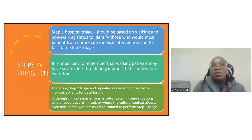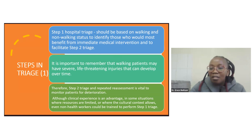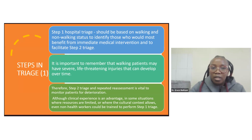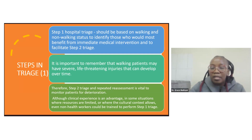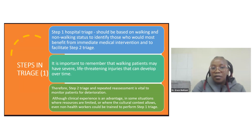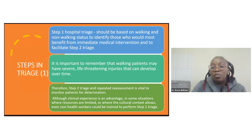In step one, you start by asking: is the patient walking? If they're walking, you direct them to a non-emergent area for delayed treatment. Those who are not walking need more urgent attention. It's important to remember that walking patients may sometimes have severe life-threatening injuries that develop over time — hence the reason for secondary triage. Step two triage and repeated reassessment is vital to monitor patients for deterioration. Even non-healthcare workers could be trained to perform step one triage where resources are limited.